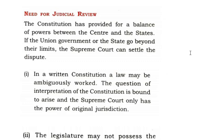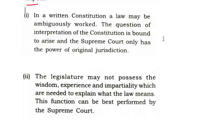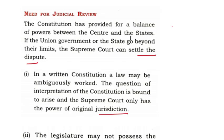Now let us understand why judicial review is needed. The Constitution has provided for a balance of power between the center and the states. If the union government or the state government go beyond their limits, the Supreme Court can settle the dispute. In a written constitution, a law may be ambiguously worded, and questions of interpretation are bound to arise — only the Supreme Court has the power to decide the correct meaning. Also, the legislature may not possess the wisdom, experience, and impartiality needed to explain what the law means; these functions are best performed by the Supreme Court.